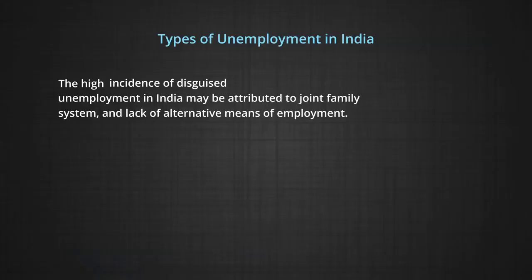One study conducted in the late 1950s showed about one-third of agricultural workers in India as disguisedly unemployed. The high incidence of disguised unemployment in India may be attributed to the joint family system and lack of alternative means of employment. Due to poor labour absorption by the relatively faster-growing secondary and tertiary sectors, farmers are forced to remain engaged in cultivation of family farms, despite there being no scope to increase output. This situation worsens because of smaller and smaller land holdings caused by subdivision and fragmentation.